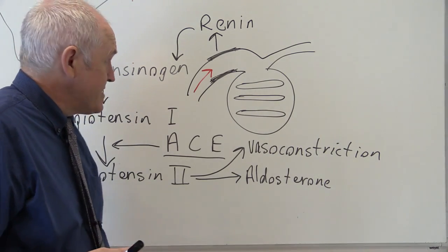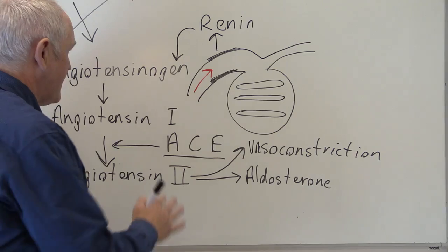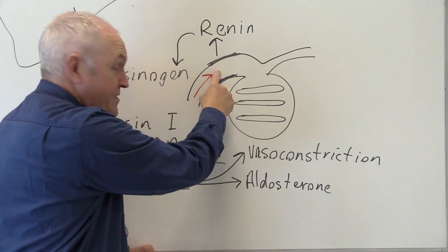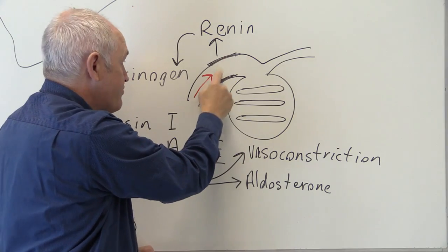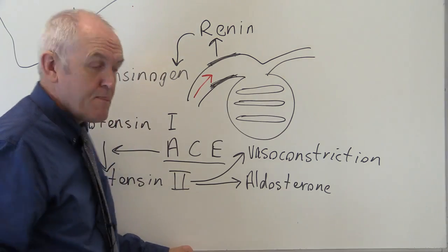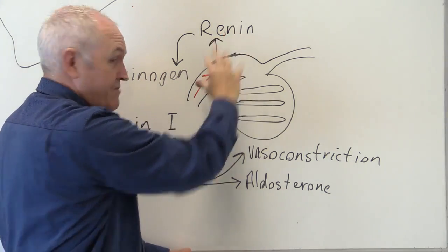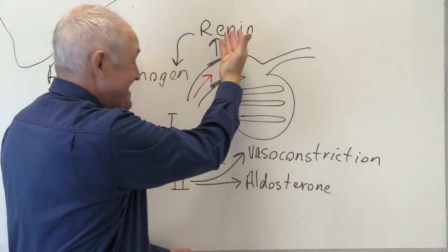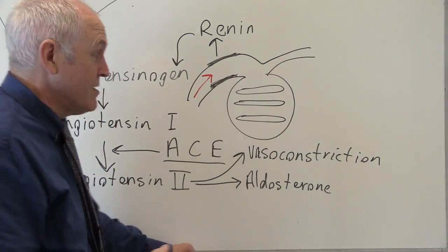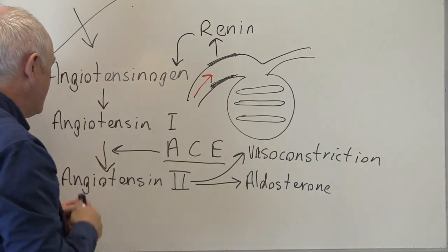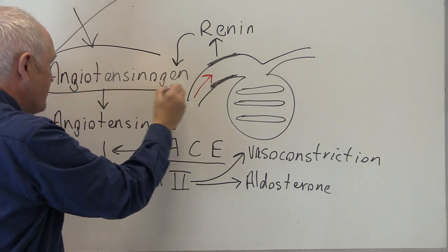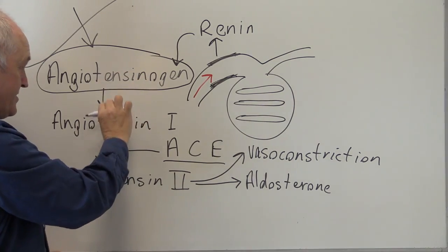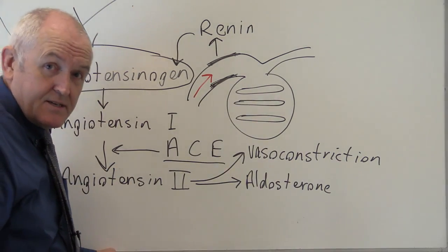Both of these effects increase blood pressure. In the healthy person, increased systemic blood pressure improves perfusion of the kidney. If there is increased perfusion, blood pressure in the afferent arteriole will be higher, and that will inhibit the release of renin. With less renin in the blood, inactive angiotensinogen remains in its inactive form and will not be converted to angiotensin type 1 or angiotensin type 2.